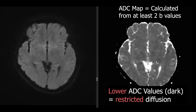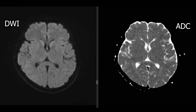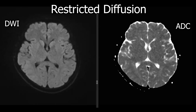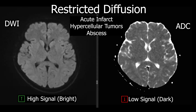The ADC map is a quantitative map with values in units of millimeters squared per second, automatically calculated by the scanner. For diseases that show restricted diffusion, such as acute infarct or hypercellular tumors like lymphoma, we usually see high signal on DWI and corresponding low signal on the ADC map. That means there is restricted diffusion.